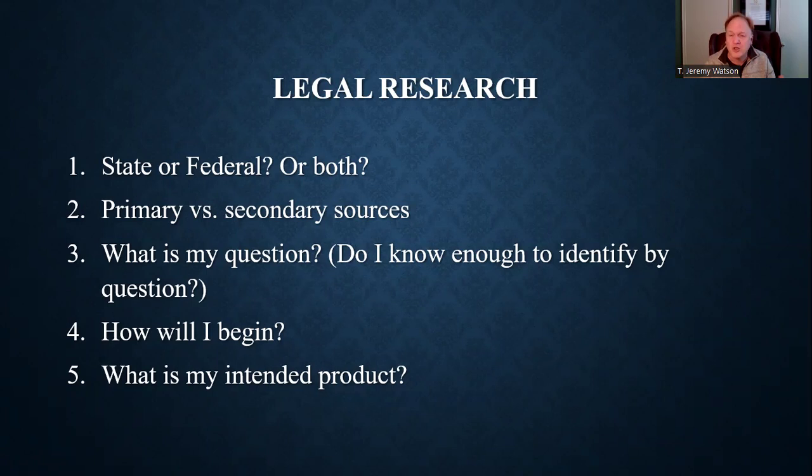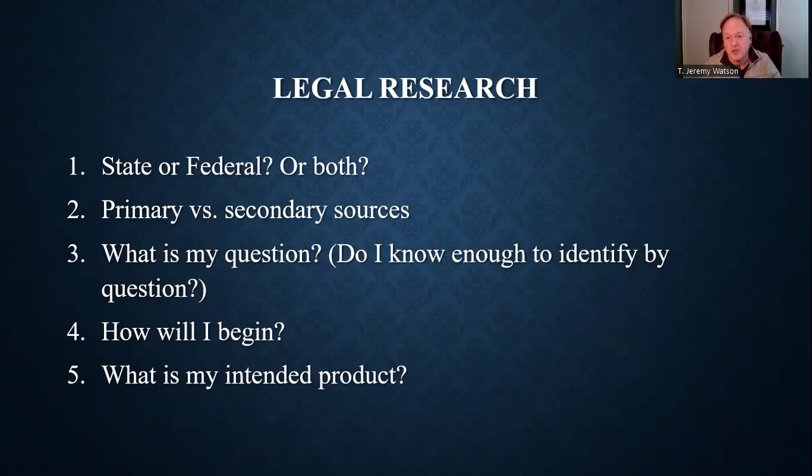You wouldn't have enough information to even identify the question yet, so you would need to start with secondary resources to learn more about the field and then narrow the question down. So maybe you could come back and say, 'Professor Watson, your question was whether this restrictive covenant was enforceable, and it turns out the real question is going to be: was it a tangent to an otherwise enforceable agreement?' That's what we need to know — was it part of an otherwise enforceable agreement? That's our real question. Then you could research that. That kind of leads naturally to the next question: how will I begin?